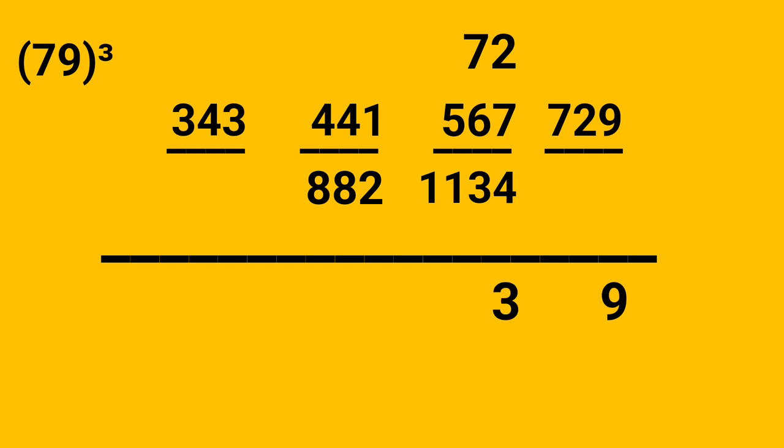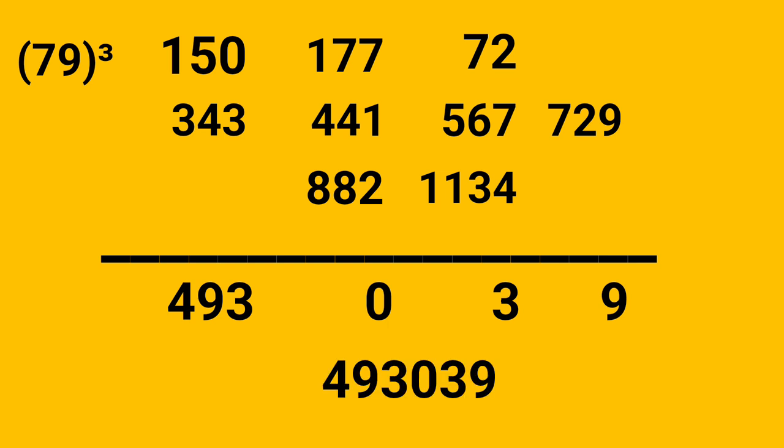Adding 177, 441 and 882, total is 1500, write 0, carry 150. At last adding 150 and 343, that makes it 493, write 493. Final answer is 493,039.